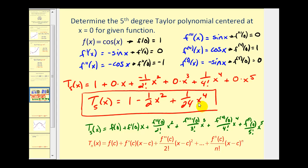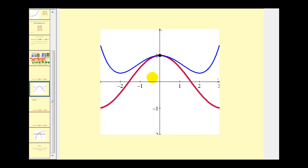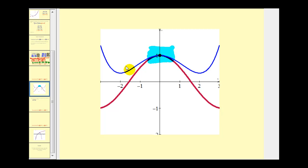Let's take a look at the graph of what we just found. The blue function is the Taylor polynomial and the red function is the original function. Notice the polynomial is a good approximation as long as we're close to x equals zero.